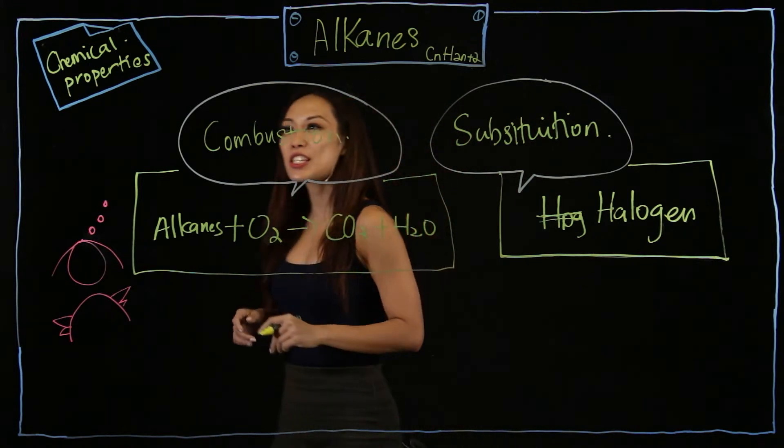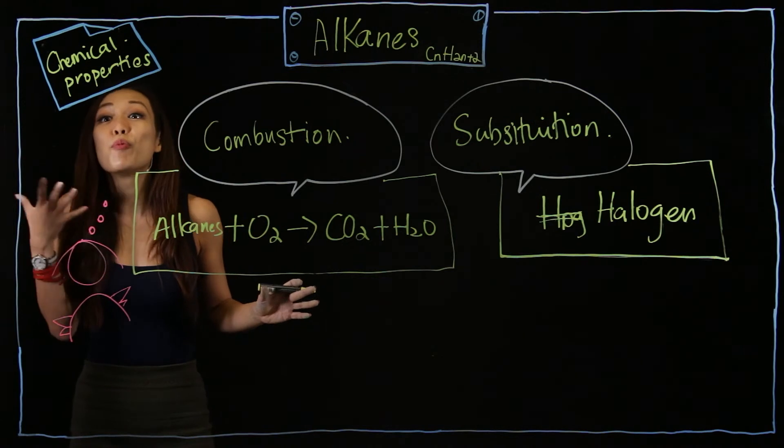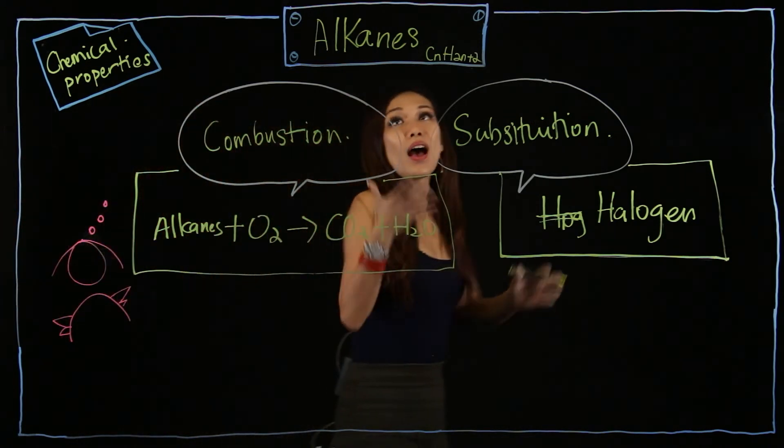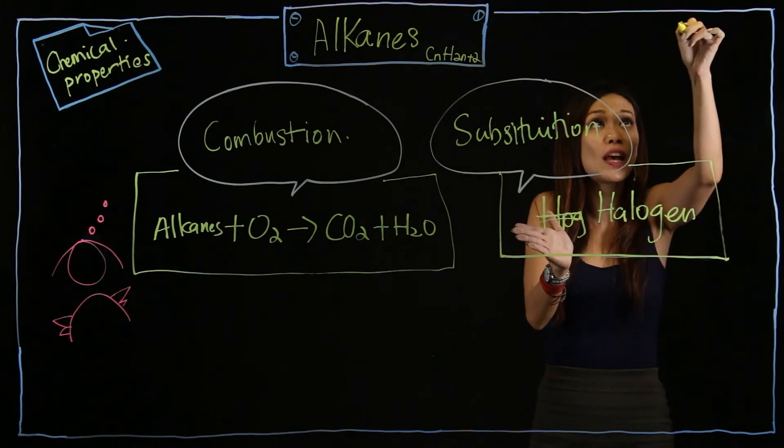Tell me, halogen is in which group of the periodic table? Which group? Quick, tell me. Yes, it will say group 7. Well done. So, the alkanes will go through this process of substitution with halogen, which is group 7.